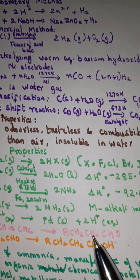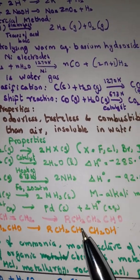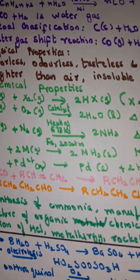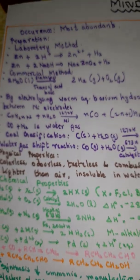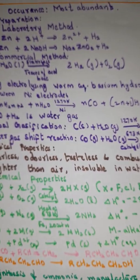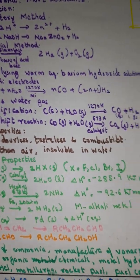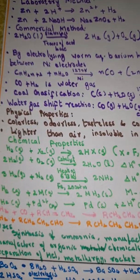H2 + Pd²⁺ gives Pd + 2H⁺. H2 + RCH=CHCH2 gives RCH2CH2CHO. H2 + RCH2CH2CHO gives RCH2CH2CH2OH. These are the different methods of occurrence and preparation.